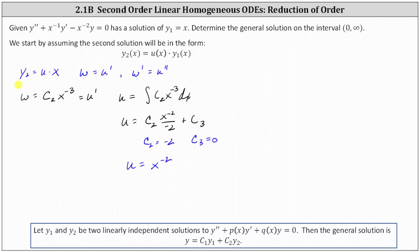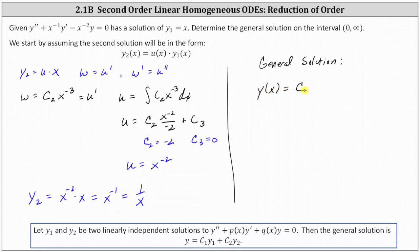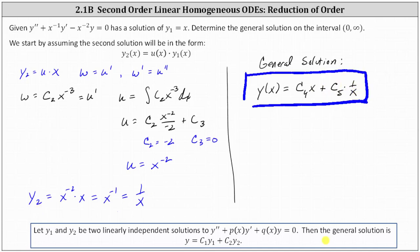Now that we know u, we can determine y2 because y2 equals u times x. So y2 equals x to the negative two times x, which is x to the negative one, or one over x. Since y1 and y2 are linearly independent, the general solution is y equals c₁·y1 plus c₂·y2. Since we've already used c₁ through c₃, we write the general solution as y(x) equals c₄·x plus c₅·(1/x). We'll look at this same problem using the shortcut method for reduction of order. I hope you found this helpful. Thank you.